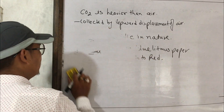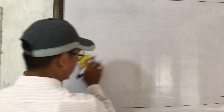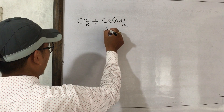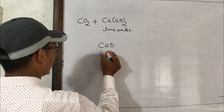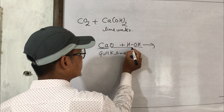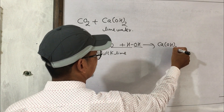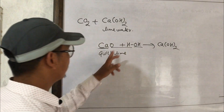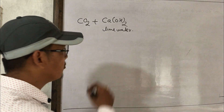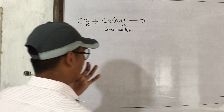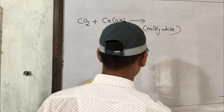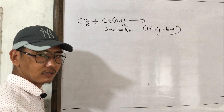For the chemical properties of CO₂: lime water is calcium hydroxide — Ca(OH)₂. Quick lime CaO, when added to water, gives Ca²⁺ + OH⁻, forming calcium hydroxide. When CO₂ is passed through lime water, it turns milky white, which indicates the presence of CO₂ gas.